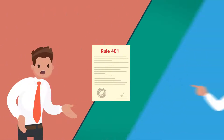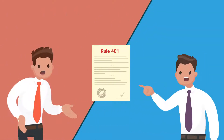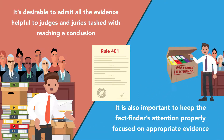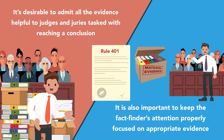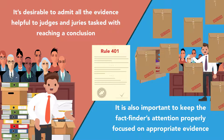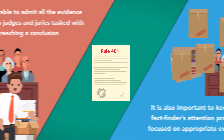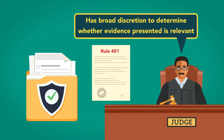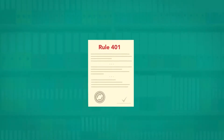The purpose of the relevance rule is to balance competing interests. On the one hand, it's desirable to admit all the evidence helpful to judges and juries tasked with reaching a conclusion. On the other hand, it's also important to keep the fact finder's attention properly focused on appropriate evidence, and it would be unjust and a waste of time to allow in all evidence regardless of its applicability. The relevance rule balances these two objectives by allowing in almost any evidence to be admitted as relevant, as long as it's potentially helpful to the case at hand. The judge overseeing a case has broad discretion to determine whether evidence presented is relevant. The relevance standard is relatively lenient.